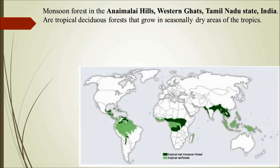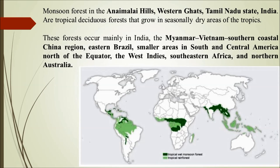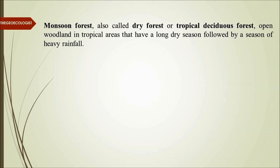In the Indian context, monsoon forest in the Annamalai hills, Western Ghats, and Tamil Nadu are tropical deciduous in nature — they grow seasonally because monsoon is a season. These forests occur mainly in India, Myanmar, Vietnam, southern coastal China, eastern Brazil, smaller areas in southern and central America, West Indies, southern Africa, and northern Australia. They are also called dry forest or tropical deciduous forest — all names refer to the same biome.